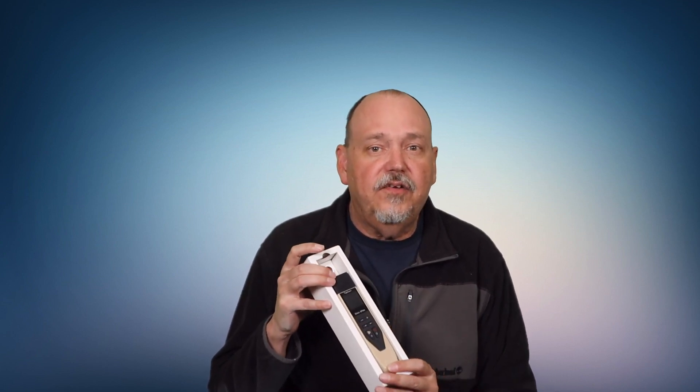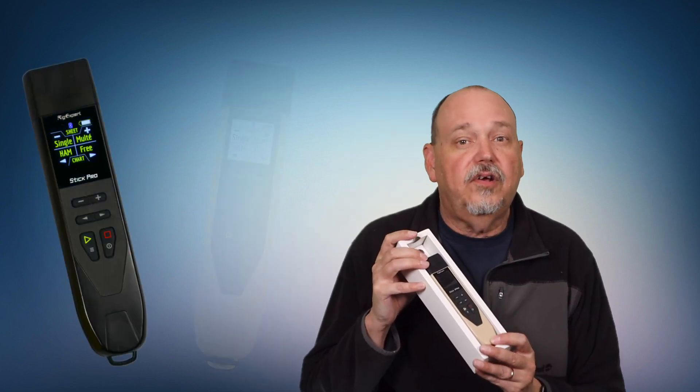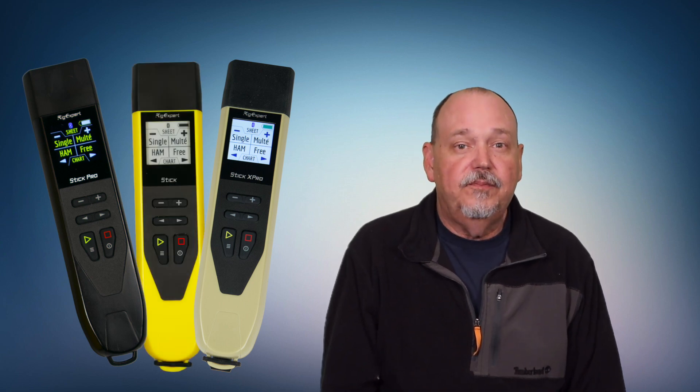And it looks very much like the others in the Stick line. Like the Stick Pro, it has a color screen, unlike the Stick 230 and the Stick 500, which both only have e-ink displays. Like the Stick Pro, it has an N-type connector, which are common on UHF and higher equipment.